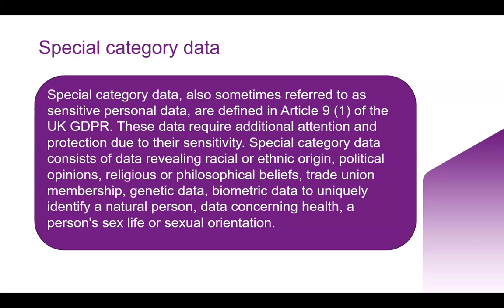We also have to think about special category data or sensitive personal data. This is a specific subset of special categories that must be treated with extra security, as defined within the UK GDPR. The specific categories include racial or ethnic origin, political opinions, religious or philosophical beliefs, trade union membership, genetic data, biometric data, health data, and data about a person's sex life or sexual orientation. All of this needs special treatment.